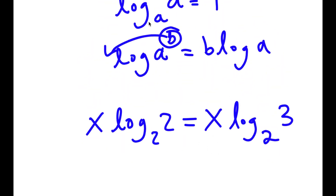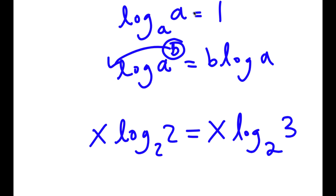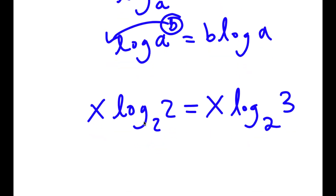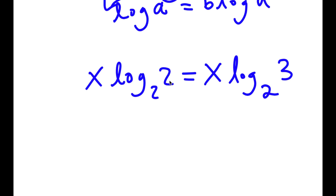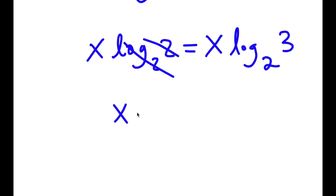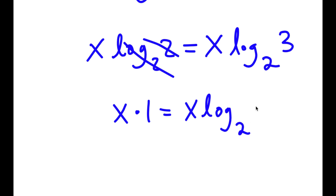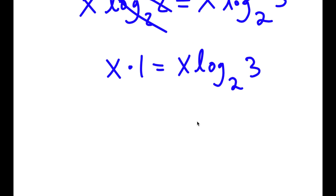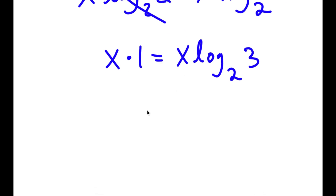Now remember, if I have something in the form log base a of a, this is equal to 1. So log base 2 of 2 cancels out, and I get x times 1 is equal to x times log base 2 of 3. And x times 1 is simply x, so I get x is equal to x times log base 2 of 3.